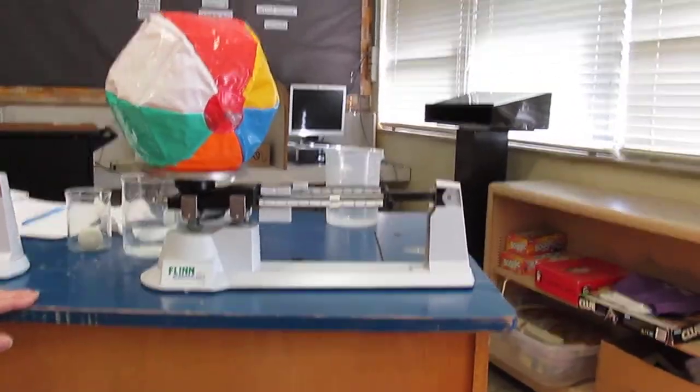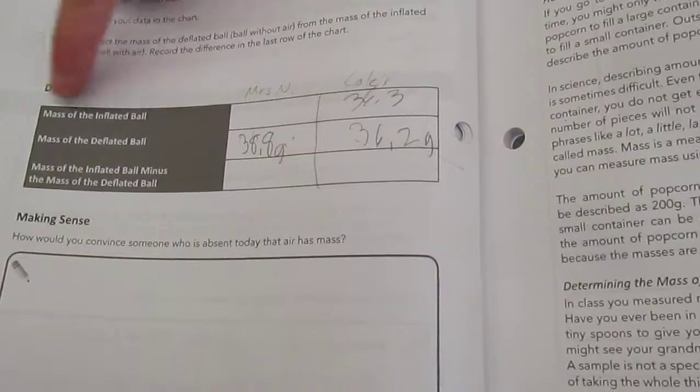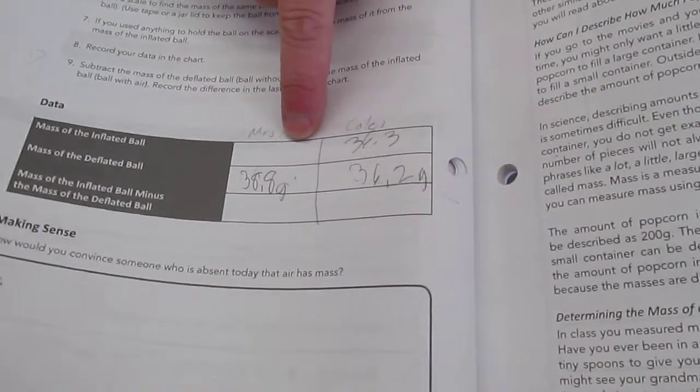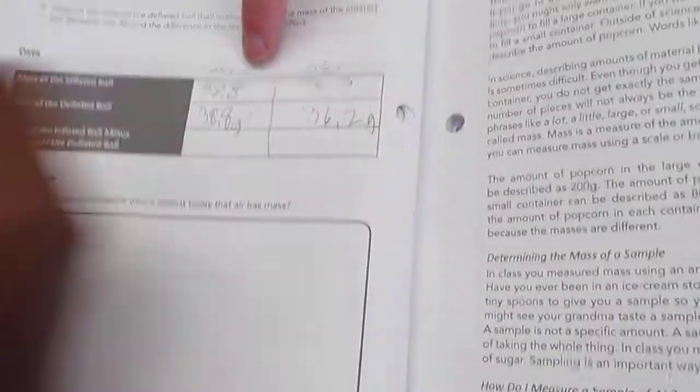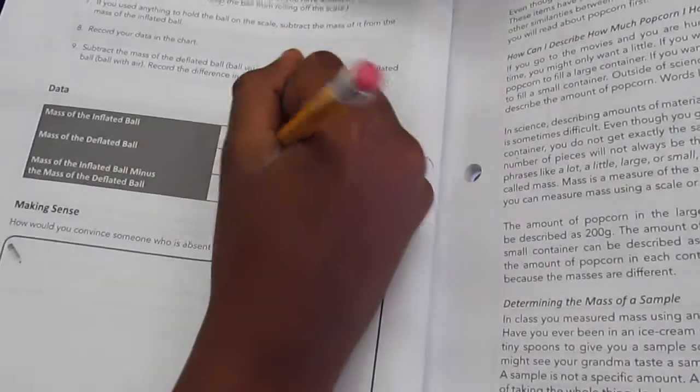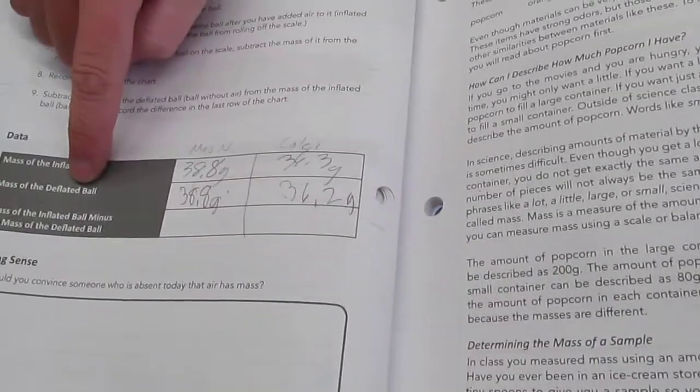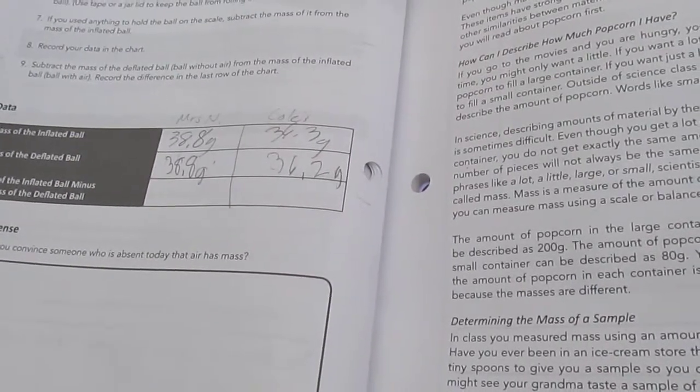So, now, on our chart, it asks us, can you look down here at this chart? It asks us to put in the mass of the inflated ball. So, for mine, it should say 38.8. David? Grams. Now, it asks you to take your inflated ball, subtract your deflated ball to get your change. What is my change? Zero.